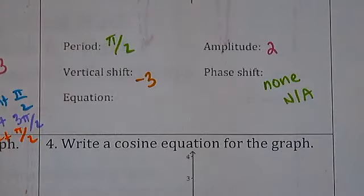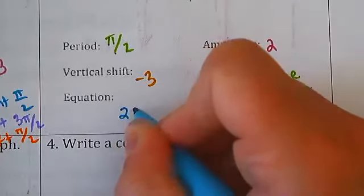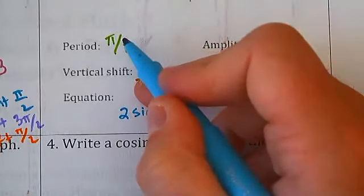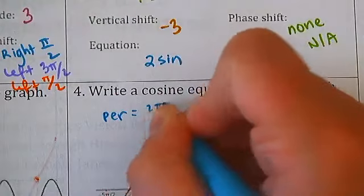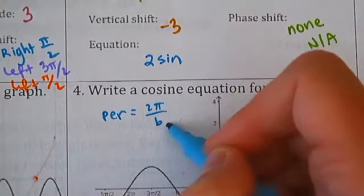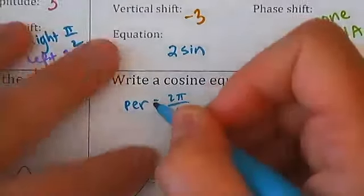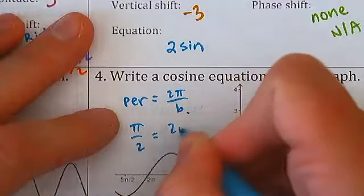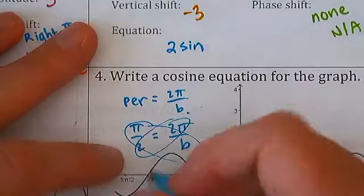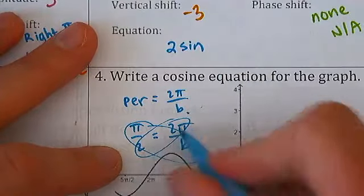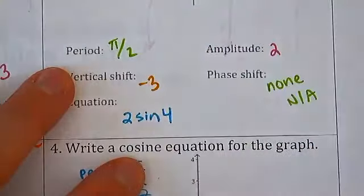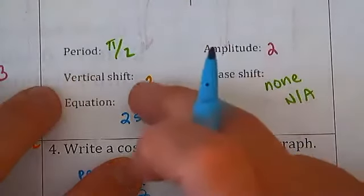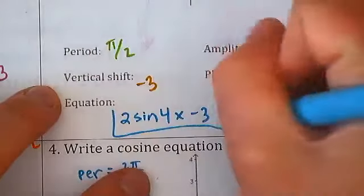Let's write the equation for sine. Amplitude first, which is 2, then sine. What is my b value if the period is π/2? Write the equation: period = 2π/b. Fill in what you know — we have the period, not b. Replace period with π/2: π/2 = 2π/b. Cross multiply: b × π = 4π, so b = 4. There is no phase shift, so just x, and the midline is −3. The equation is 2sin(4x) − 3.